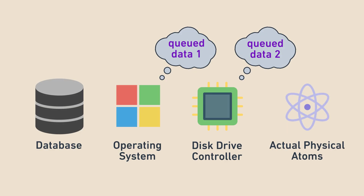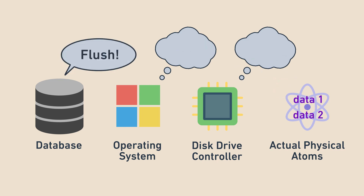To avoid batching, it's possible to tell the operating system and disk drive controller to write everything currently queued, which is called flushing. A database with durability both executes a write to the disk drive on every update and tells the disk drive to flush the write.